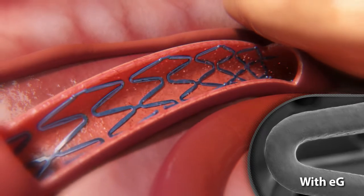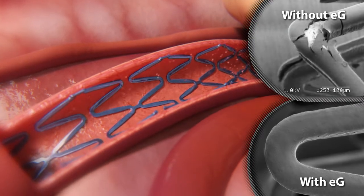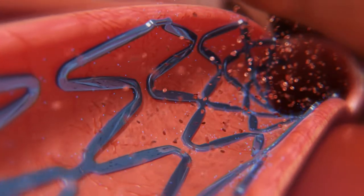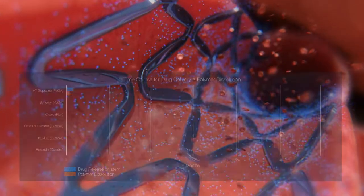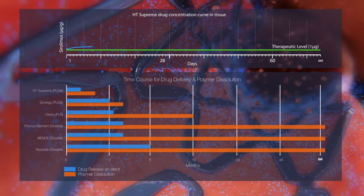Thereby preventing a potential source of increased inflammation and thrombosis. Once the HT Supreme is deployed, the PLGA steadily degrades. Unlike other stents, the HT Supreme's controlled drug release profile ensures nearly 100% release of sirolimus after 28 days, leaving no drug residue.